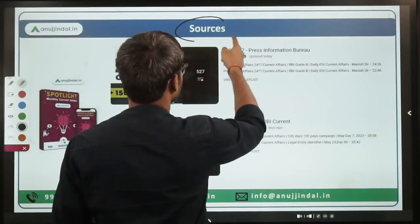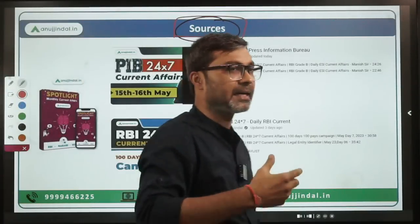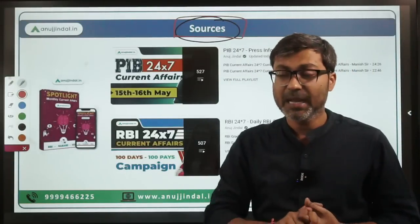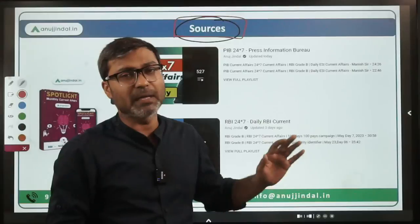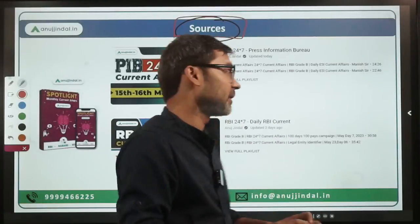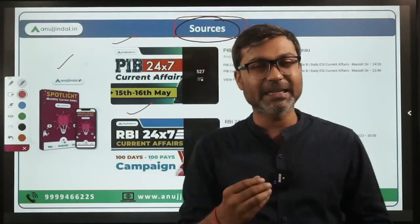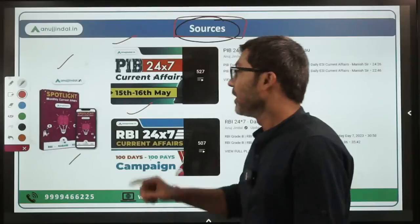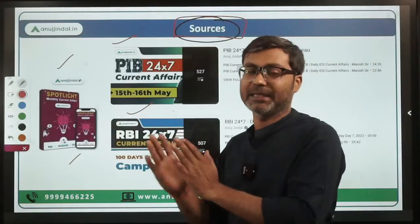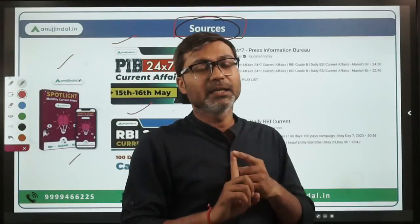The very major cause of concern among all of you is which source to follow for covering GA. Most people are asking whether they have to cover PIB 247 and RBI 247 for Phase 1, and Spotlight for Phase 2. For RBI Grade B general awareness — not only Phase 1 but both Phase 1 and Phase 2 — you have to cover all three sources: Spotlight, PIB 247, and RBI 247. RBI is now asking very comprehensive, detailed questions and you cannot rely on only one source.